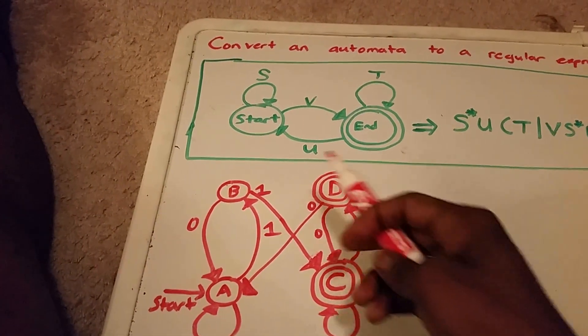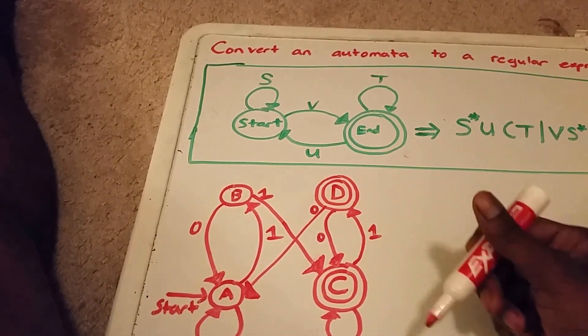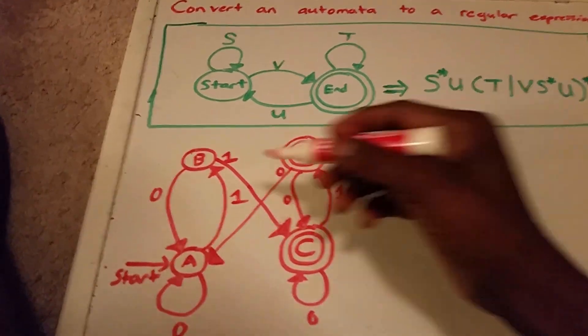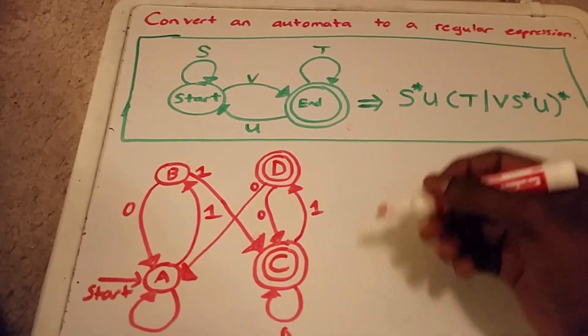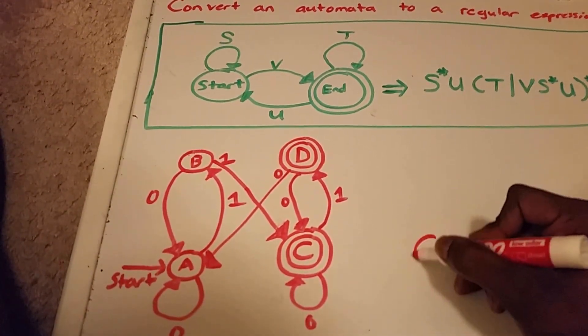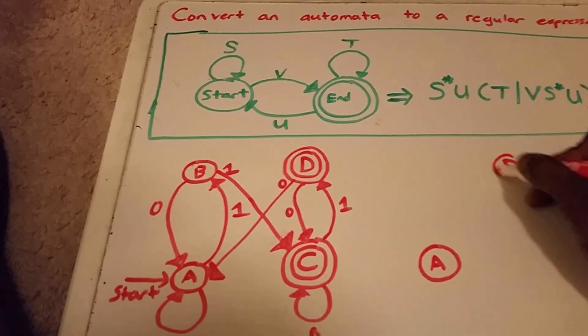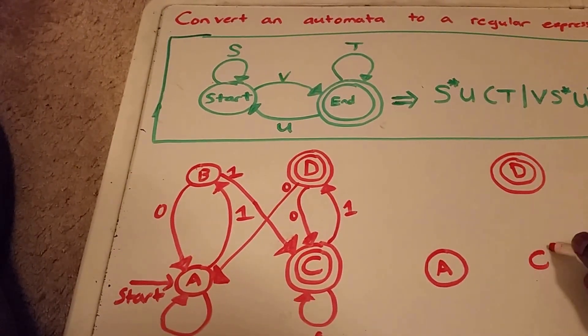And there's two states that we want to keep, the start state and the end state. Since we have two end states, we're going to choose one of them to keep. So let's go ahead and get started. Let's change this into a regular expression. So first I'm going to start off by rewriting the states that we want to keep: state A, state D, and state C.